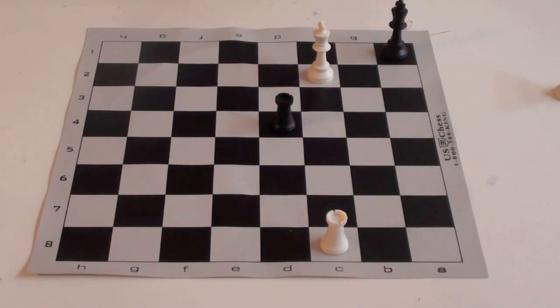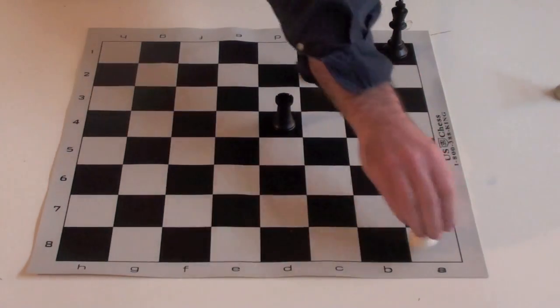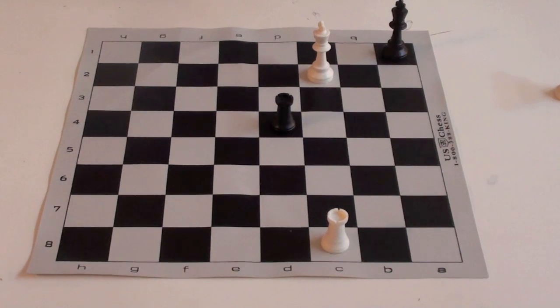Now it's black's turn and notice that white has checkmate on a8. So the only thing that black can do right now to stop the checkmate is bring his rook over here to a4.